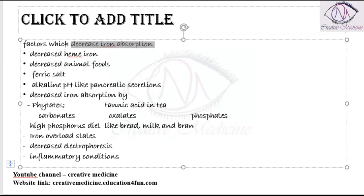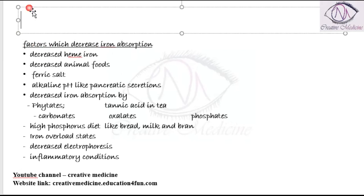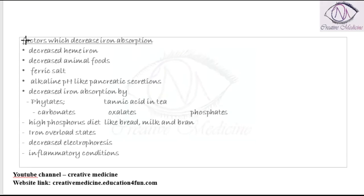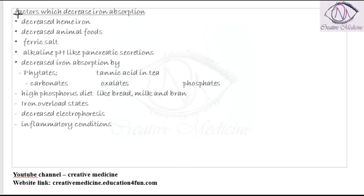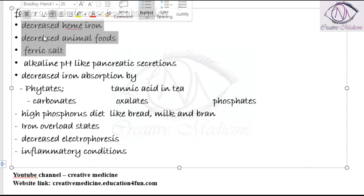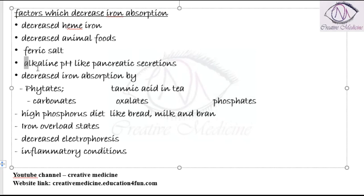Factors which decrease iron absorption are if there is decreased heme iron, decreased animal foods, or if the patient takes ferric salt. Iron absorption can be decreased by alkaline pH.